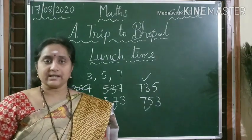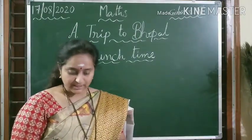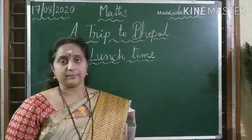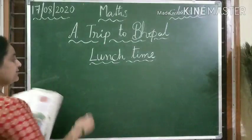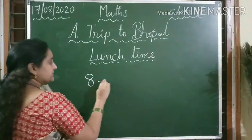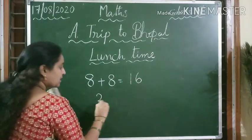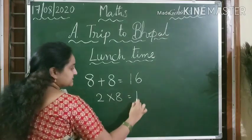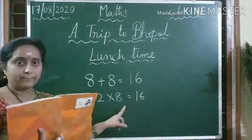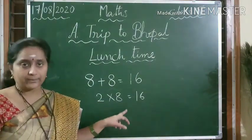Let us see another one. A number becomes double if it is increased by 8. What is the number? When we add 8 to 8 we get 16, which means 2 times 8 is 16 — 2 times is nothing but double of the number. So the required number is 8.